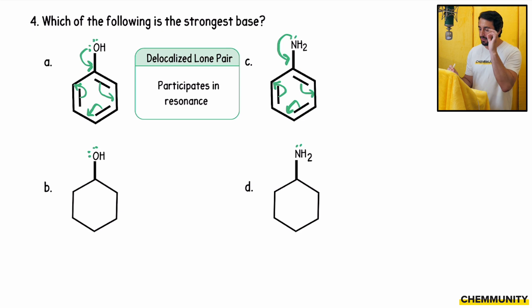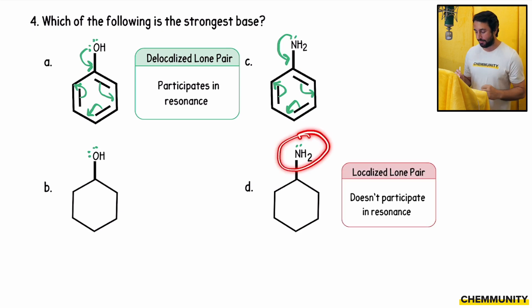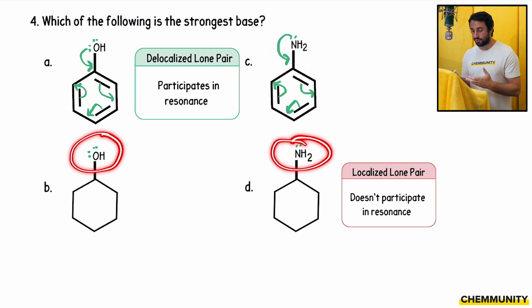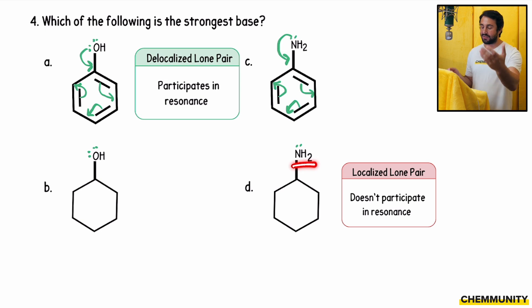Over here, that lone pair is completely localized on the nitrogen atom. So that is going to be much better available for acid-base reactions and accepting a proton. So we know it's not going to be either of these. These are the ones where it's bad because of resonance. Now we're comparing an oxygen atom and a nitrogen atom. As it turns out, a nitrogen atom is a better base than an oxygen atom. It's better at accommodating another proton because N+ is more stable than O+ because of the higher electropositivity of nitrogen. Nitrogen is to the left of oxygen on the periodic table. It can better accommodate a positive charge. So we're going to go with D there. D is going to be the strongest base.